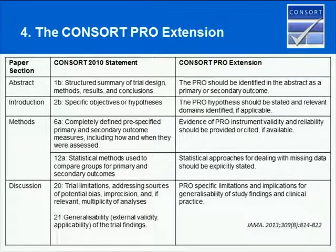This work was published in JAMA in 2013, and here are the five extension items. First, PROs should be identified in the abstract as the primary or secondary outcome. Second, the PRO hypothesis should be stated and relevant domains identified if applicable. Third, the evidence of PRO instrument validity and reliability should be provided or cited if available. Fourth, statistical approaches for dealing with missing data should be explicitly stated. And finally, in the discussion, PRO-specific limitations and implications for generalizability of study findings in clinical practice should be described.